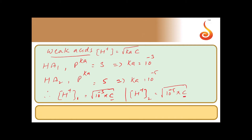The value of C is the same because both weak acid solutions have the same concentration. Comparing the two, H⁺ from acid 1 is greater than H⁺ from acid 2. In an electrolyte concentration cell, the half cell with higher ion concentration acts as cathode to give a positive EMF. Therefore, acid 1 acts as cathode and acid 2 acts as anode.